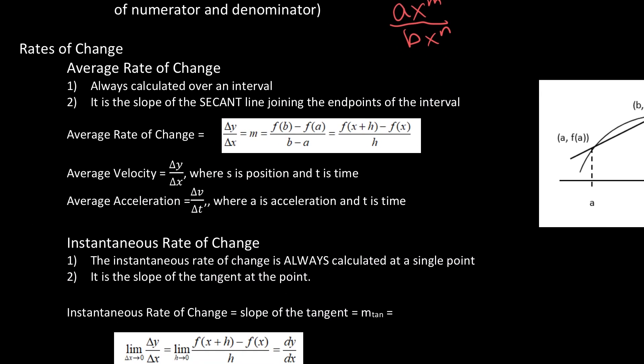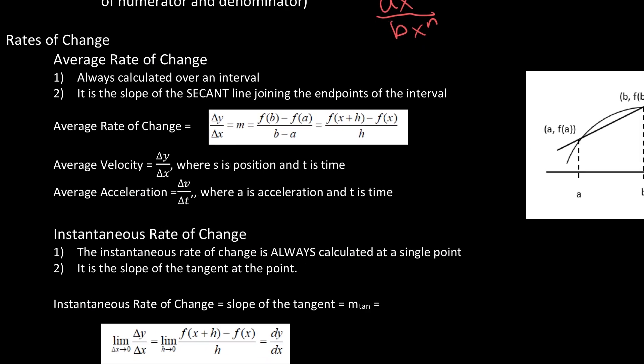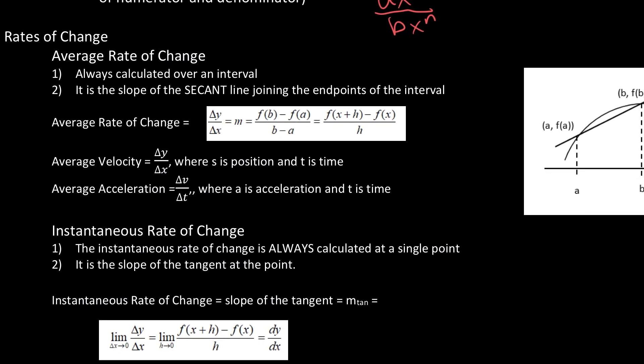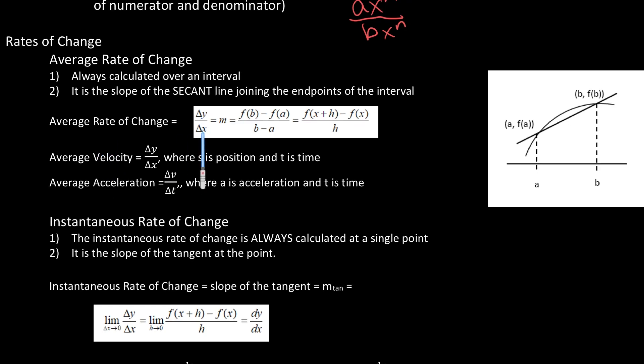Let's talk about rates of change. To find the average rate of change, it's always calculated over an interval. So we are going to take this over an interval from a to b, and that is a secant. So you end up with the average rate of change as being delta y over delta x, which is f(b) minus f(a) over b minus a. And also we can consider it to be f(x+h) minus f(x) all over h. The average velocity will be delta y over delta t, where s is the position and t is the time. Acceleration will be the change in velocity over the change in time, where a is the acceleration and t is time.